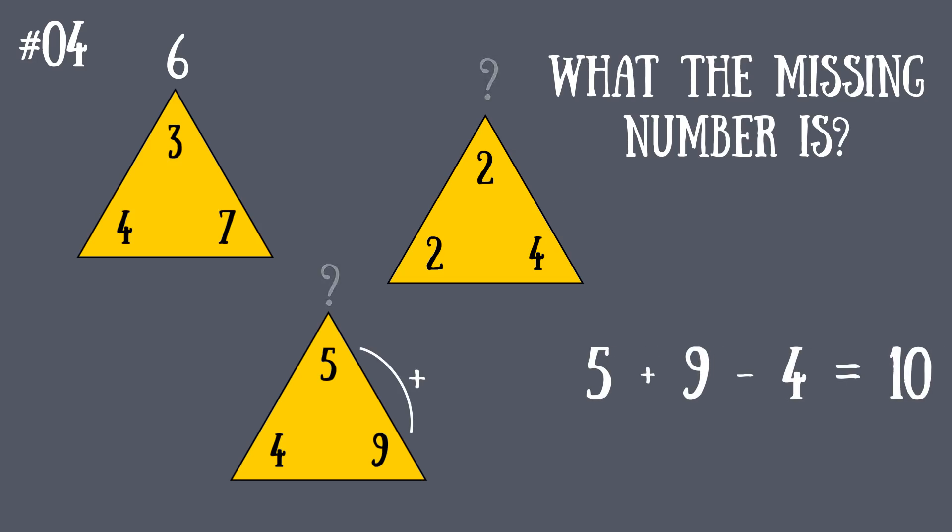For the third one, 9 plus 5 minus 4 is 10. So if you guessed 4 and 10, congratulations—you got it right.